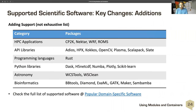Supported software key changes — this is not exhaustive, but it's a list of things we're trying to provide. HPC applications like NEKTАР, CP2K, and Worf Roams. Libraries such as ADIOS, HPX, and Kokkos. Programming languages like Rust, which is new. Python libraries include Dask, H5py, NetCDF, and Numba. Astronomy has WCS tools and WSClean. For bioinformatics, usually through containers but also through modules: BBStools, Diamond, and ExaML. For a complete list, please refer to the documentation.